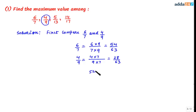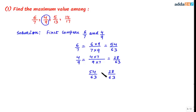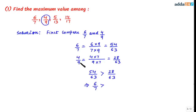Comparing 54/63 and 28/63 — when the denominators are the same, we compare the numerators. We can see that 28 is definitely less than 54. This implies 54/63 = 6/7 is greater than 28/63 = 4/9. So 6/7 is greater than 4/9.